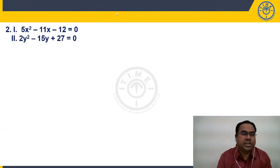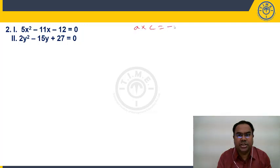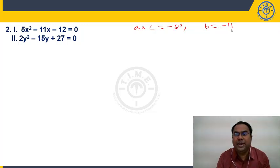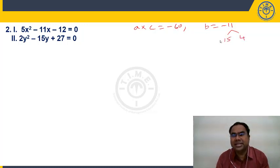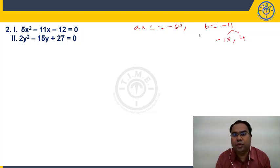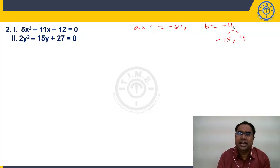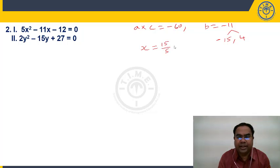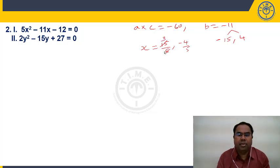Question 2: 5X² − 11X − 12 = 0. A×C = 5×(−12) = −60, B = −11. A×C is negative, write B as difference of two numbers: 15 and 4, difference = 11. For product −60 and sum −11: use −15 and 4. (−15)×4 = −60, (−15)+4 = −11. Change signs: −15 becomes +15, divided by 5 = 3. +4 becomes −4, divided by 5 = −4/5. Roots of X: 3, −4/5.